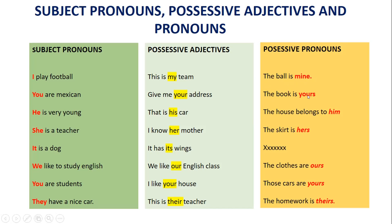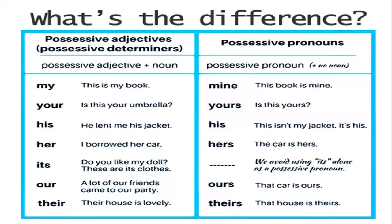The book is yours. The house belongs to him. The skirt is hers. In the case of 'it', it's not normally used as a possessive pronoun because it sounds repetitive. The clothes are ours. Those cars are yours. The homework is theirs. So the possessive pronouns are mine, yours, his, hers, ours, yours, and theirs — and they do not modify a noun.